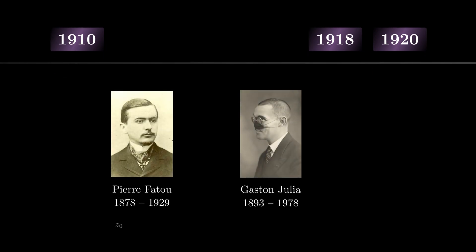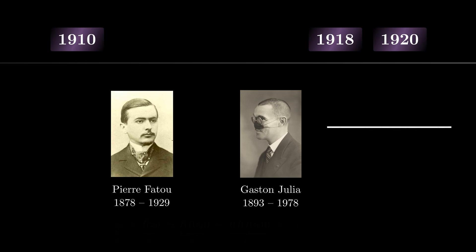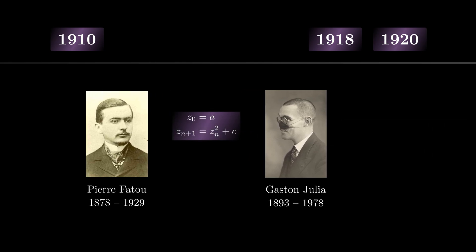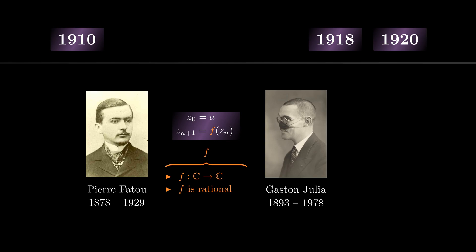To understand the origin of the Mandelbrot set, we have to go back to the beginning of the 20th century. During this time, mathematicians Pierre Fatou and Gaston Julia studied the repeated application of complex functions and investigated how the resulting sequences behaved — a field known today as complex or holomorphic dynamics. Both mathematicians investigated such sequences in a more general setting and developed a whole theory around them, focusing on rational functions that map from ℂ to ℂ and that are holomorphic. In addition to Julia sets, there are also Fatou sets, which are given by the complement of a Julia set.